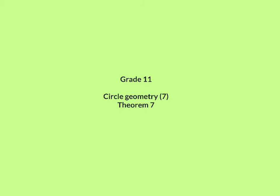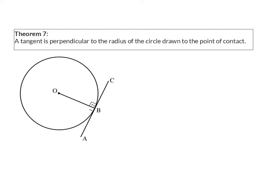In lesson 7 on circle geometry, we are going to have a look at Theorem 7. Theorem 7 says a tangent — and in our case that is ABC — is perpendicular, forming 90 degrees, to the radius of the circle drawn to the point of contact, which is point B.